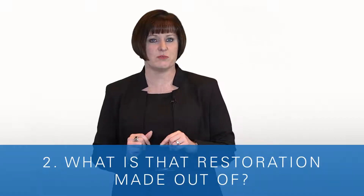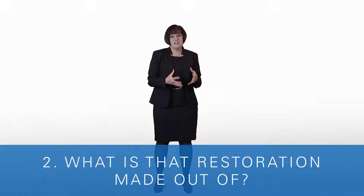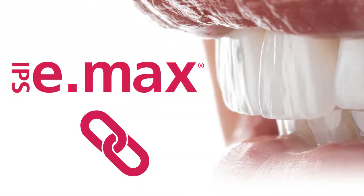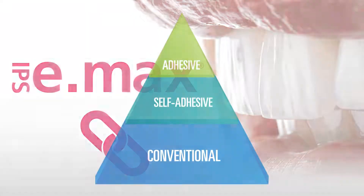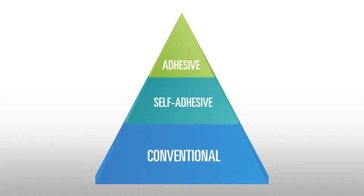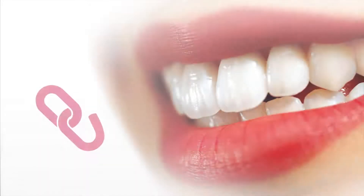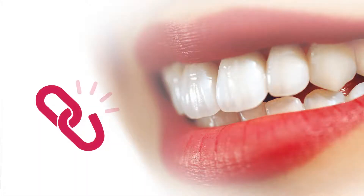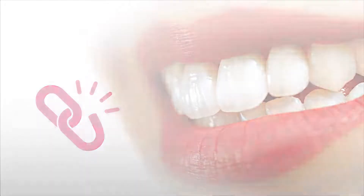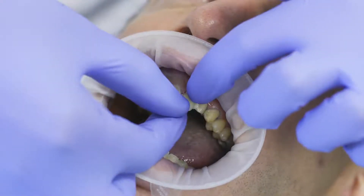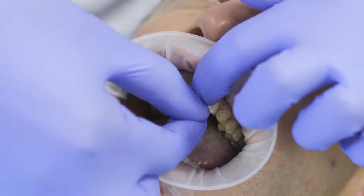Number two: what is that restoration made out of? This really does make a difference. If it's a high-strength ceramic material like IPS e.max or zirconia, then you can use any of these categories. If it's a lower-strength restoration, like leucite-reinforced or feldspathic porcelain, then you have to bond it in at all times, since the restorative material is not strong.